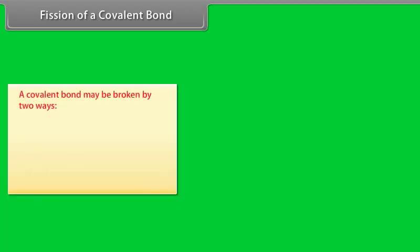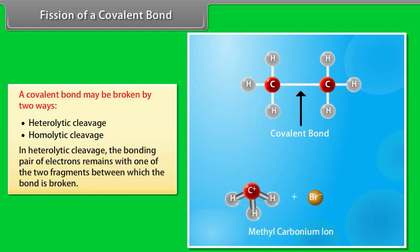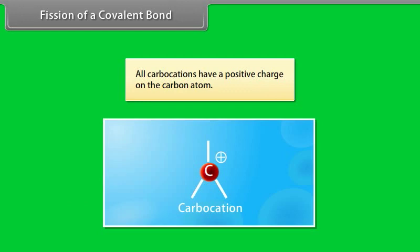Fission of a covalent bond: a covalent bond may be broken by two ways — heterolytic cleavage and homolytic cleavage. In heterolytic cleavage, the bonding pair of electrons remains with one of the two fragments between which the bond is broken. All carbocations have a positive charge on the carbon atom.